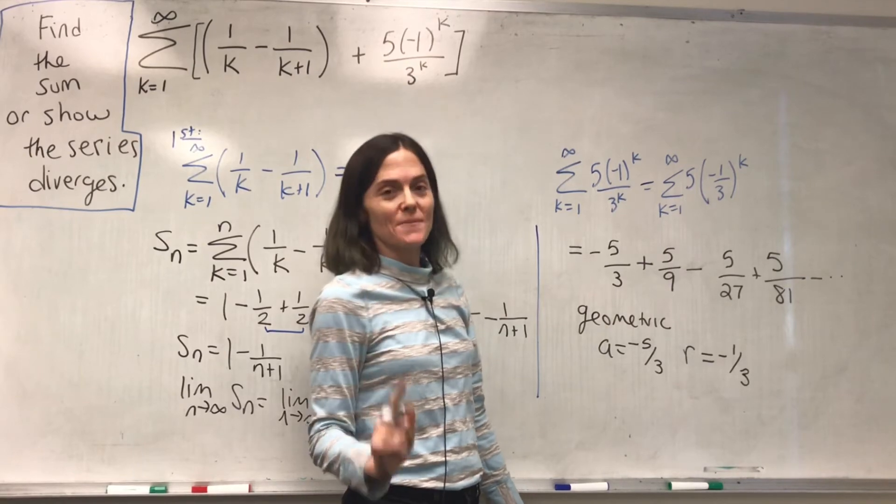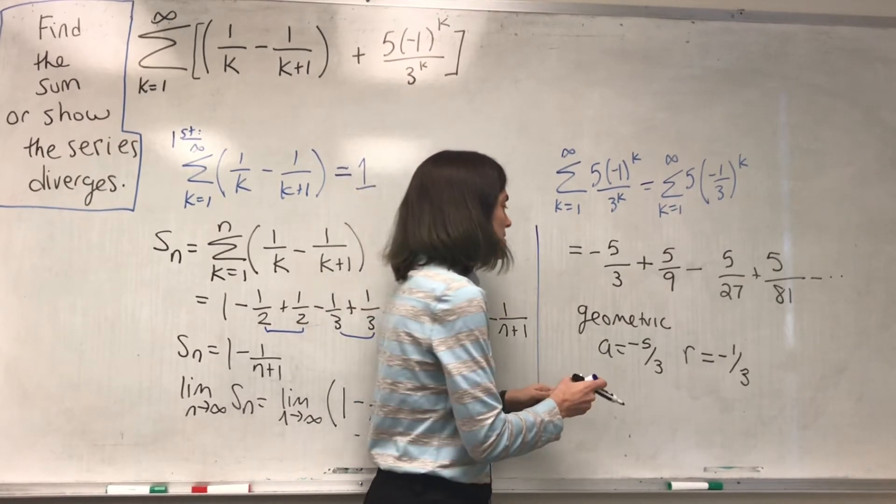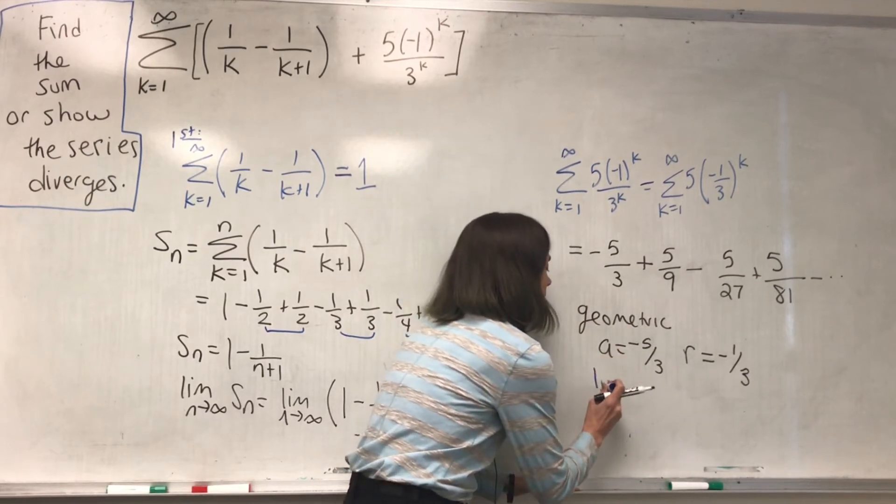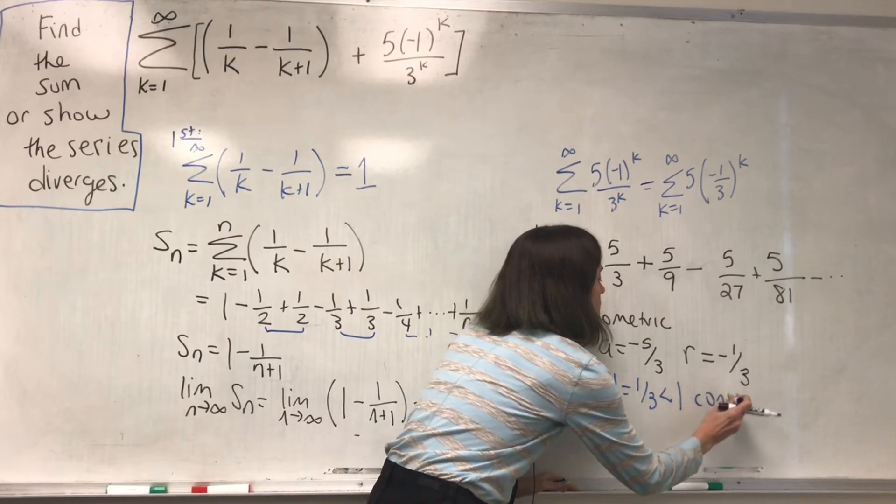We know the geometric series exactly when it converges and diverges. In this case, absolute value R, 1 third less than 1. This will converge.